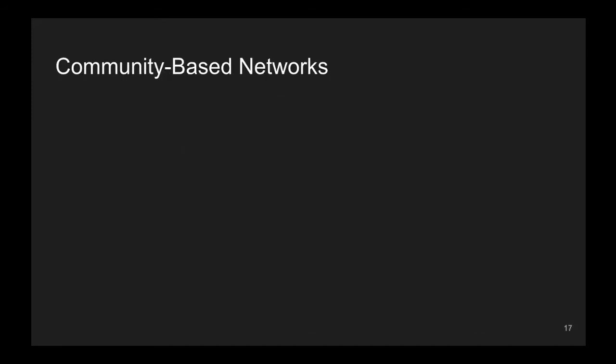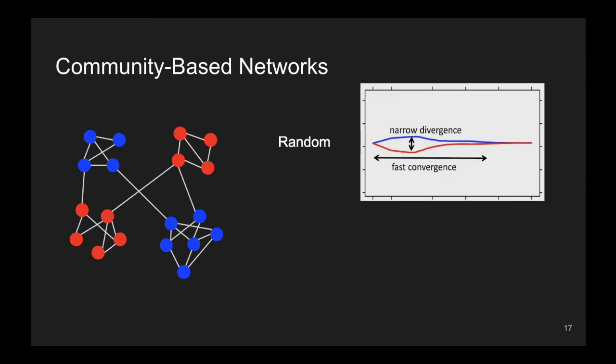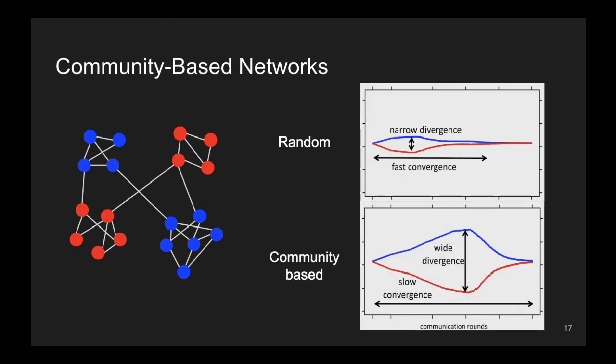We then moved on to analyze what happens when the network exhibits clear communities, like in this example. What we have seen is that while in a random topology convergence is quite fast, and the divergence between nodes with blue and red data is narrow, if there are clear-cut communities so that nodes with blue data and red data can hardly communicate with each other, the divergence will be much wider and the convergence many orders of magnitude slower.